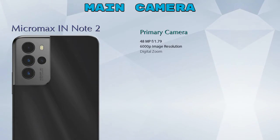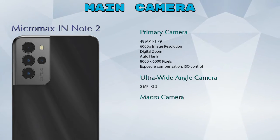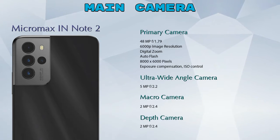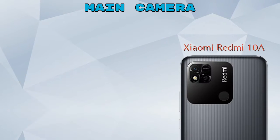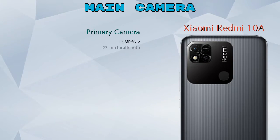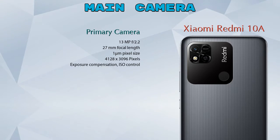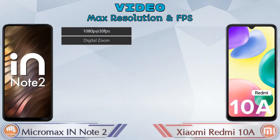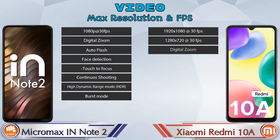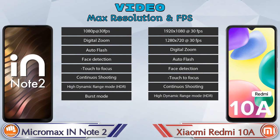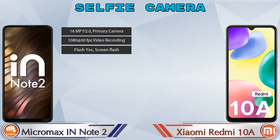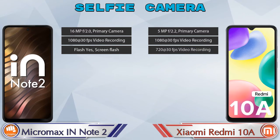Now let's talk about cameras. The IN Note 2 has four rear cameras: a primary camera, ultra-wide angle camera, macro camera, and depth camera. The Redmi 10A has one rear camera which is just the primary camera. For video, both phones have eight different types of features available. For the front selfie camera, both phones have a single camera with three different features available.